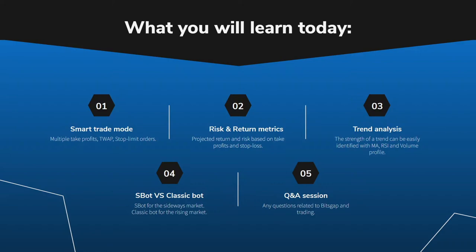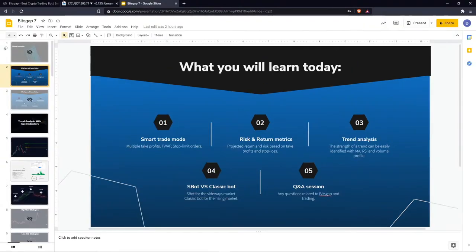We will also cover risk and return metrics — that's the element of return and loss projection before you actually initiate the trade. We'll cover trend analysis, showing you three indicators for identifying whether the trend is strengthening or losing upside momentum. We'll also cover the S-Bot and Classic Bot, what makes them different, with real examples of when it's best to launch each. There'll be a Q&A session at the end. Let's jump straight into action and go to the Bitsgap platform.